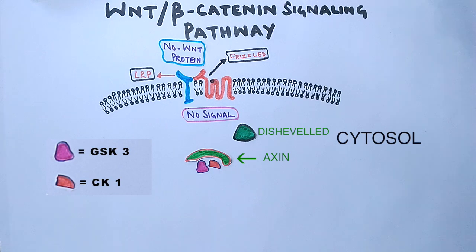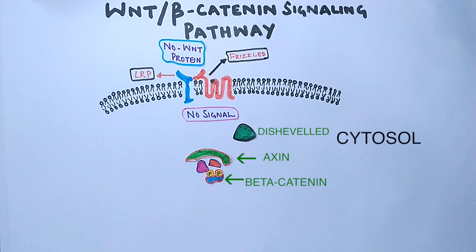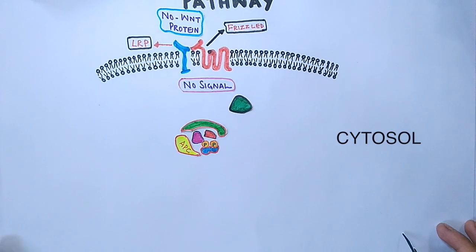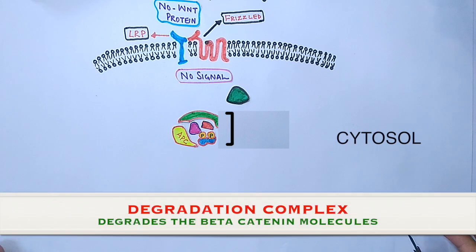We also have a beta-catenin protein which is phosphorylated here, and APC protein also. This whole assembly is termed as the degradation complex, except the beta-catenin molecule.